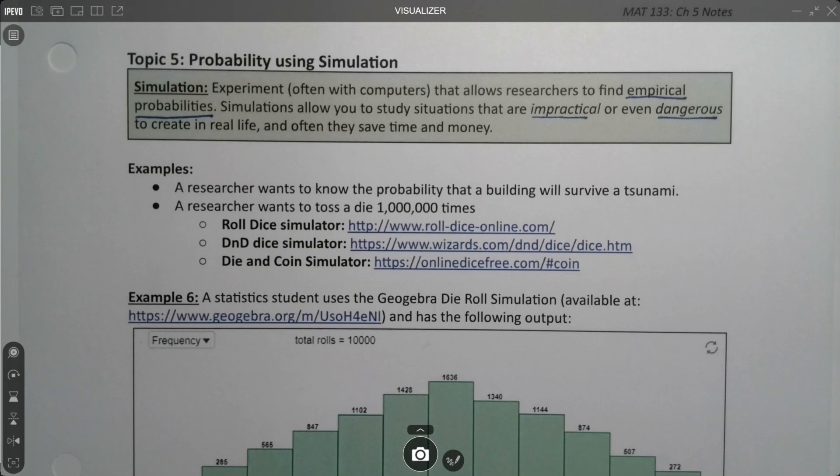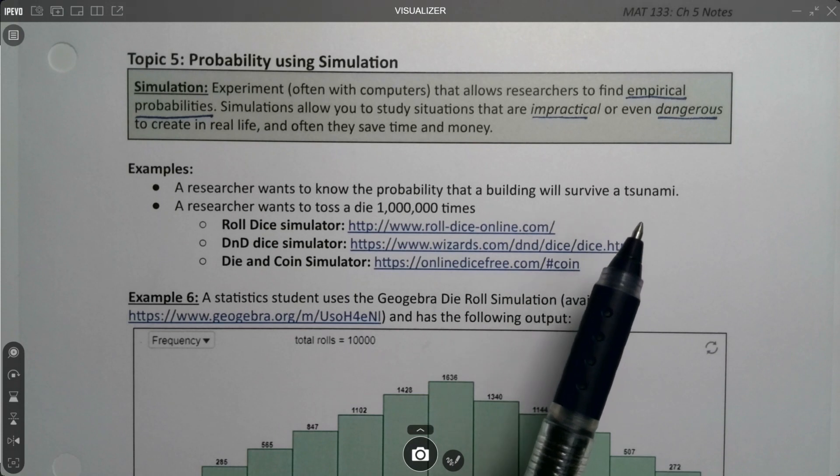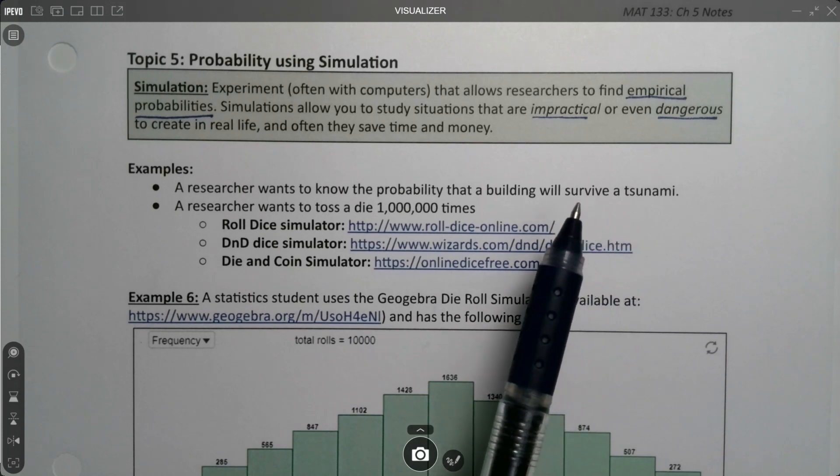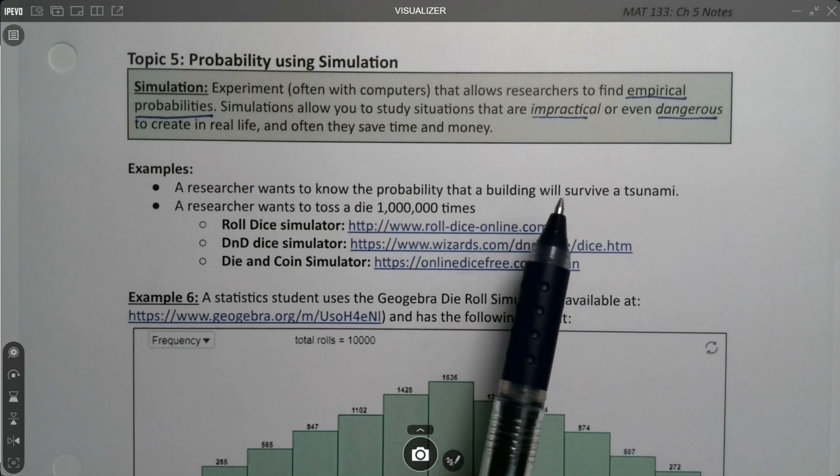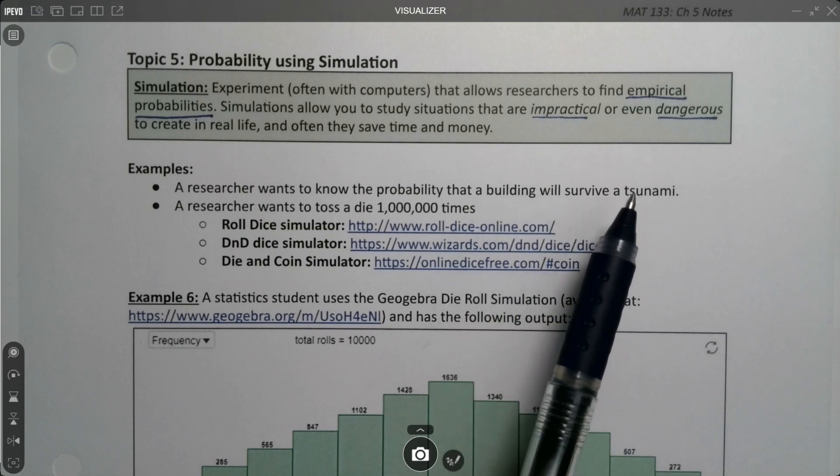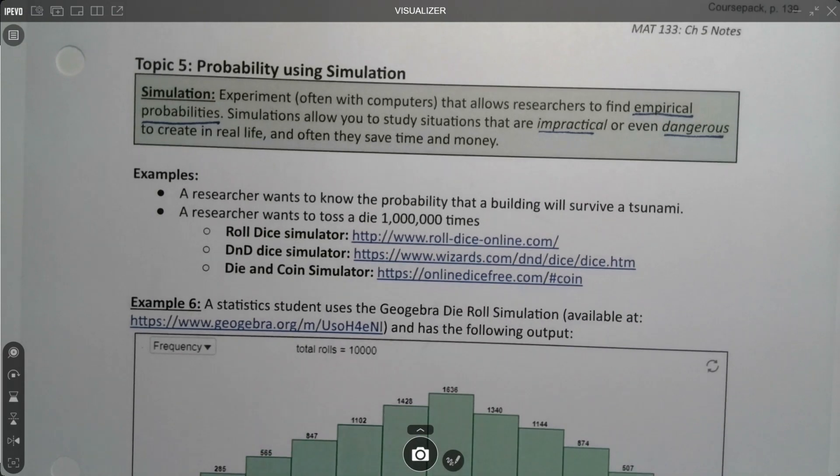For example, a researcher wants to know the probability that a building will survive a tsunami. Well, they're not going to be able to just build a building for the heck of it and throw a tsunami at it. They're going to have to run it all in a computer model, put the specs of the building in the computer, run the specs of a tsunami through the computer and crash them against each other and see what happens.